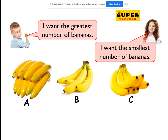Bunch A: 1, 2, 3, 4, 5, 6, 7, 8, 9. You have to be very careful — 9, right? Let's count for B: 1, 2, 3, 4. Four. And last, let's count for C: 1, 2, 3, 4, 5, 6. Six.